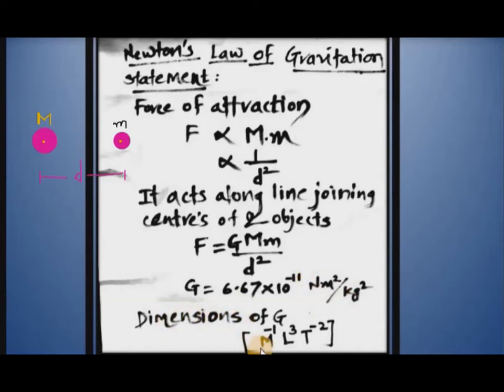The dimensions of G are M raised to minus 1, L raised to 3, and T raised to minus 2. You can find the dimensions of G if you know the dimensions of force, mass, and distance.